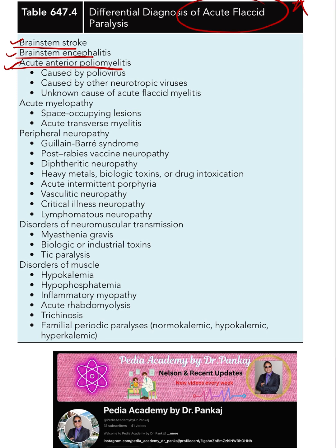Acute myelopathies — any spinal cord involvement in the form of a space-occupying lesion or acute transverse myelitis — can cause acute flaccid paralysis. Peripheral neuropathy is very important and more common nowadays. Key causes include Guillain-Barré Syndrome (GBS), post-rabies neuropathy, and diphtheritic neuropathy. Acute intermittent porphyria is also very important.